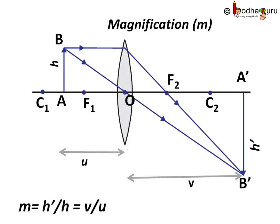Let us say U is the distance of the object from the optical centre and V is the distance of the image from the optical centre.